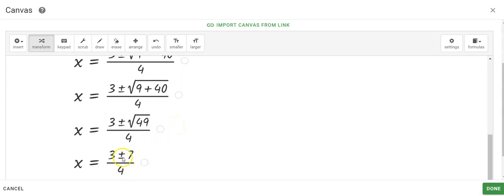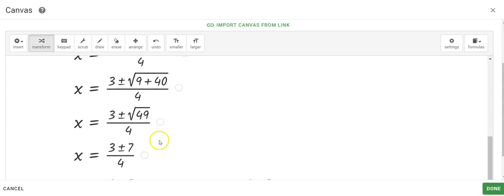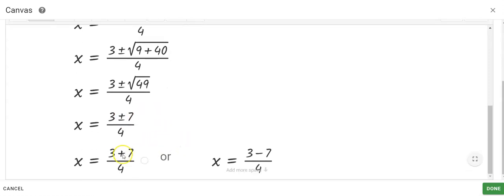Since you have the plus minus, if you'll double tap on that, it will give you two separate expressions, and then you can simplify each one. You'll get your two solutions.